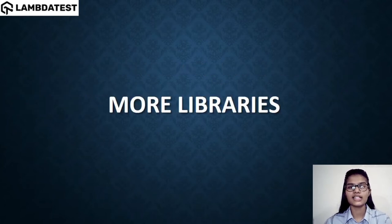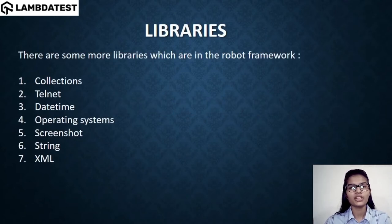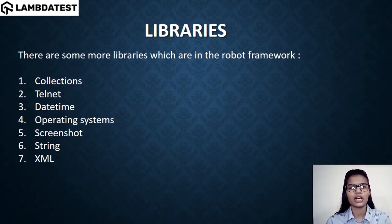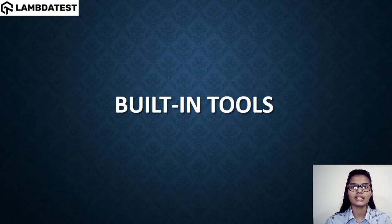We've discussed the four main libraries of Robot Framework in detail. Apart from those, there are more libraries available: Collections, Telnet, DateTime, Operating System, Screenshot, String, and XML. These libraries also help with different things under Robot Framework, but the previous four — Built-in, Dialogues, Process, and Remote — are especially important for test execution.